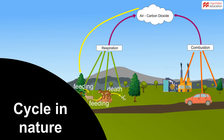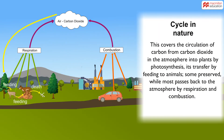Cycle in Nature. This covers the circulation of carbon from carbon dioxide in the atmosphere into plants by photosynthesis, its transfer by feeding to animals, some preserved, while most passes back to the atmosphere by respiration and combustion.